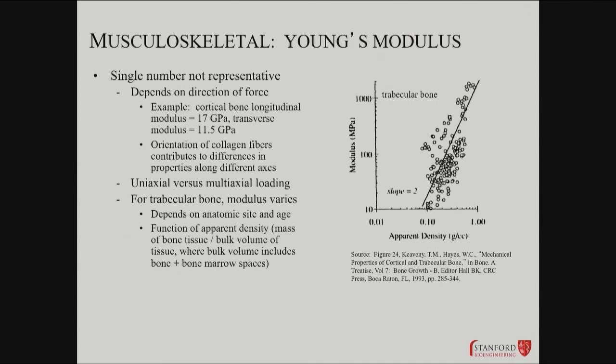But a single number doesn't tell you everything. Even a particular bone is going to have a longitudinal modulus and a transverse modulus depending on where the force is coming from. There's also a shear modulus, and it also depends on exactly where you measure. The precise orientation of the collagen fibrils will set the Young's modulus along different axes. There's also uniaxial versus multiaxial loading to consider, and for trabecular bone these properties can vary over the age of an individual, giving a huge range of possible Young's moduli.